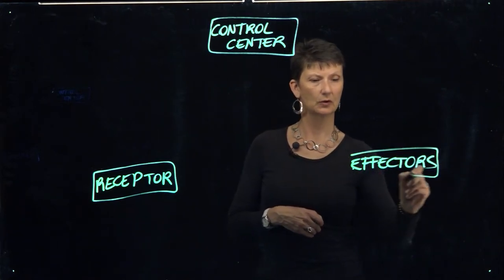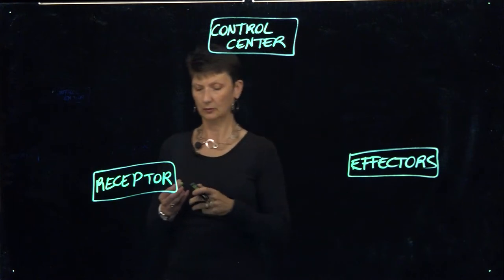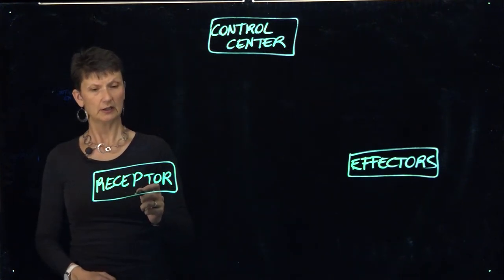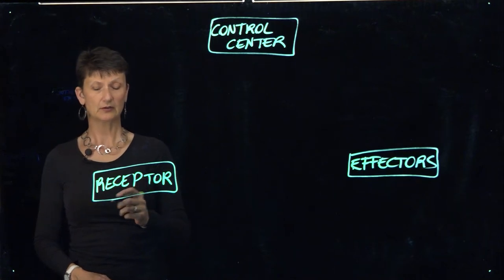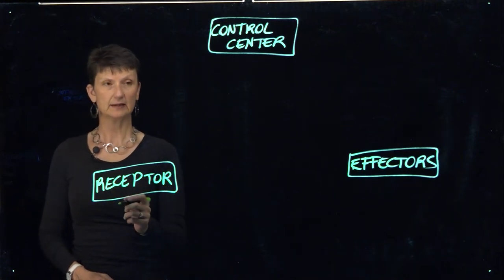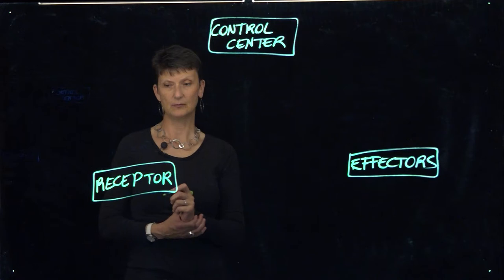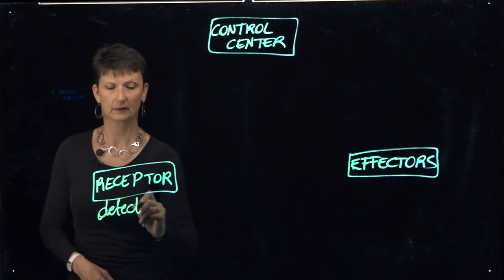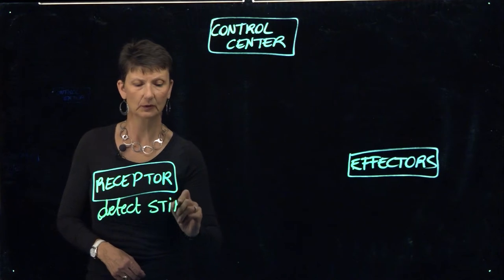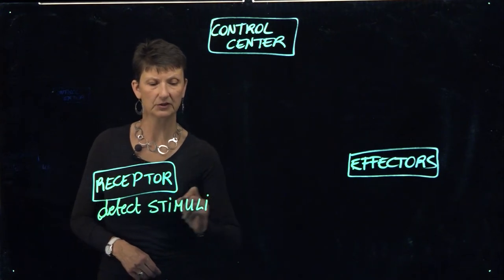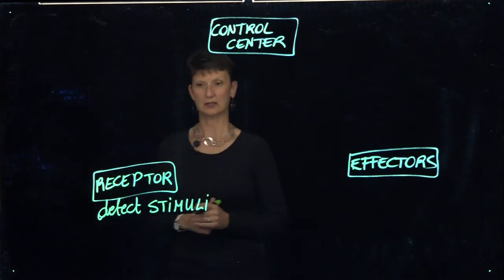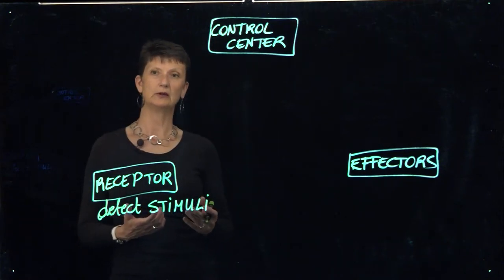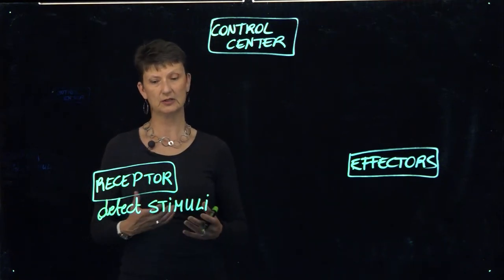What are all of these components? Receptors are structures in various parts of your body, such as your skin, that can detect changes in the environment — in other words, they detect stimuli. A stimulus is a change in the environment, and stimuli is plural.